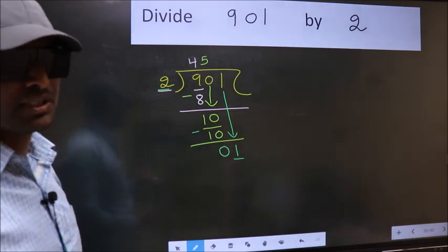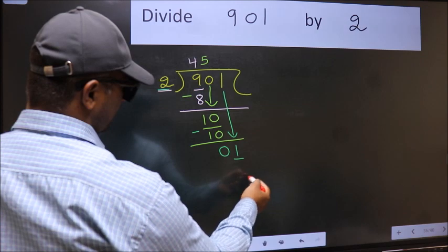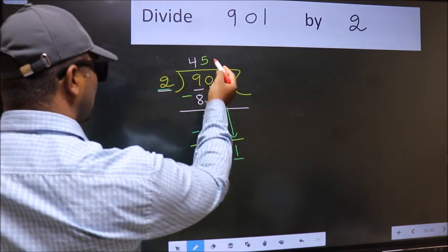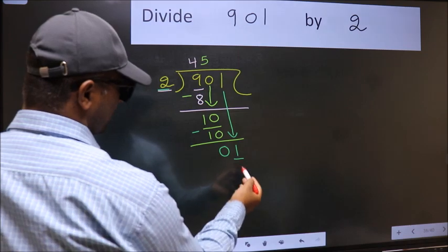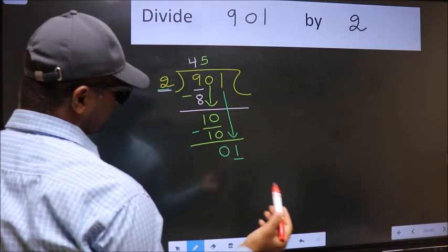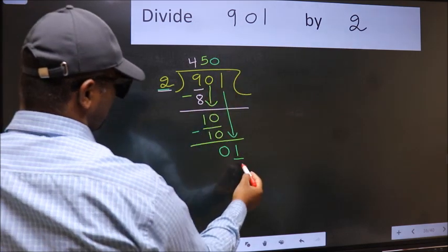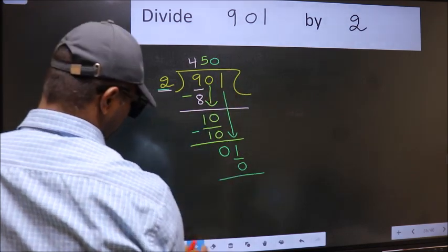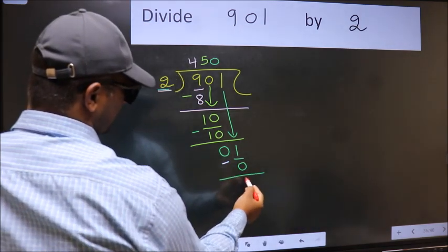Instead, what you should think of doing is, which number should we take here? If I take 1, we will get 2. But 2 is larger than 1. So what we should do is, we should take 0. So 2 into 0, 0. Now we should subtract. 1 minus 0, 1.